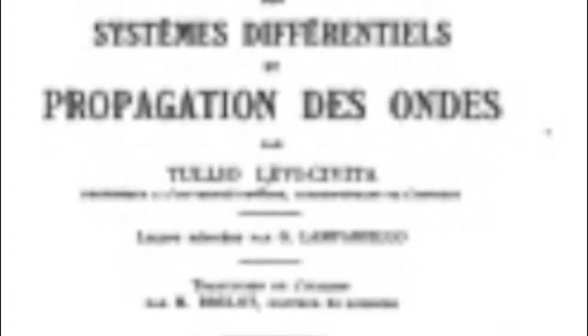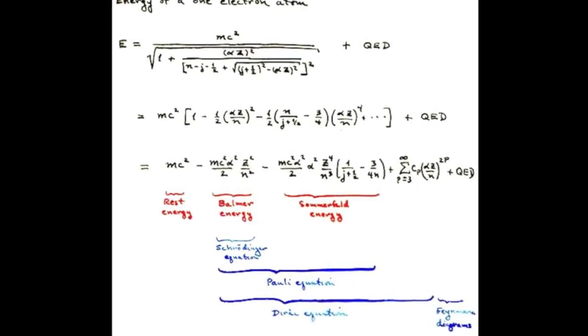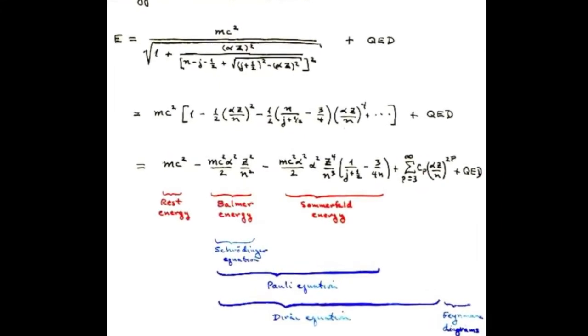Levi-Civita's book is still used and remains one of the classical texts translated in many languages. He corresponded with Einstein between 1915 and 1917, with whom he exchanged problems about the gravitational field. He also contributed to Dirac's equation in quantum mechanics.